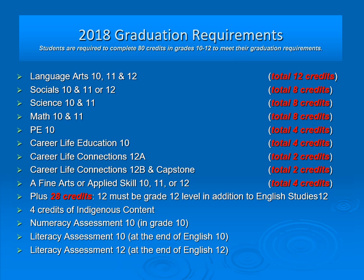A Fine Arts or Applied Skills course must be taken in Grade 10, 11, or 12, plus an additional 28 credits, meaning 7 courses must be taken. At the Grade 12 level, students must have at least 12 credits, which is 3 courses in addition to English 12. Students must have 4 credits of Indigenous content by the time they graduate. Additionally, students will be required to take a Numeracy Assessment in Grade 10, a Literacy Assessment in Grade 10, and a Literacy Assessment at the end of English 12.